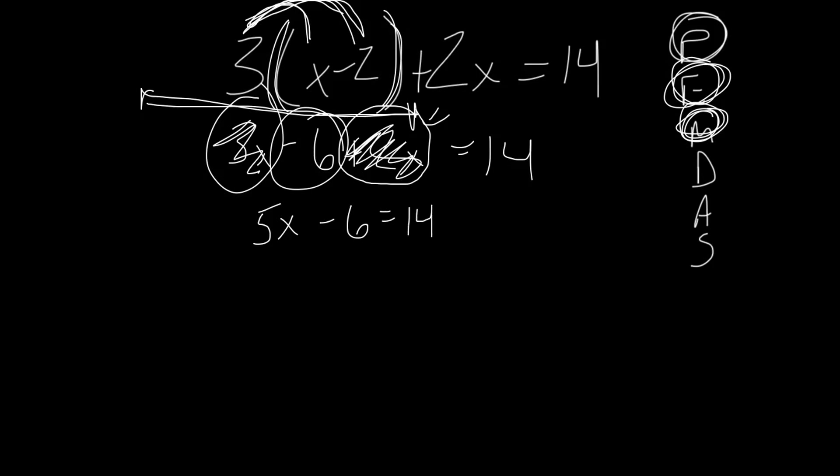Next step, we need to get rid of that negative six. What's the opposite of minusing six? Adding six. And why do we do the opposites? So that we can get rid of it on the side that we want to get rid of it on. Because negative six plus six is zero. So therefore, 5x plus zero is the same as saying 5x. Then we just do 14 plus six is 20.